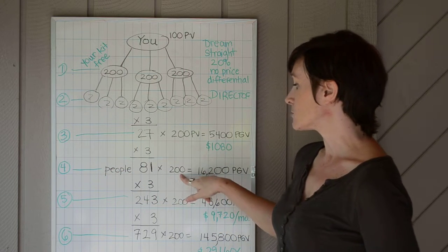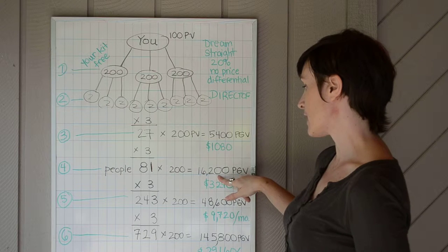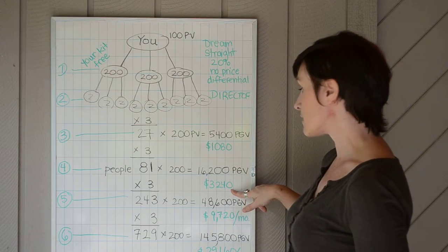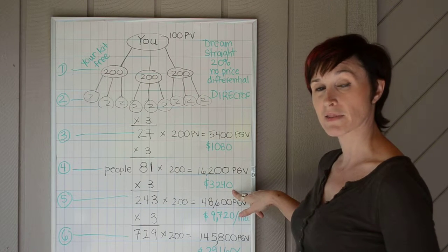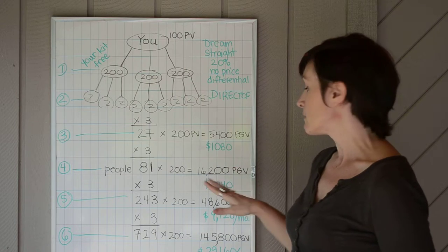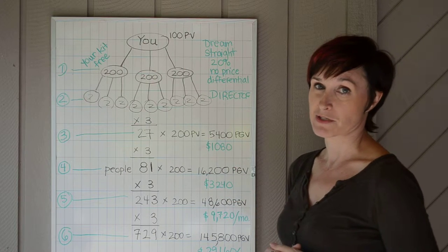So take it down another level. You're down to 81 people, 200 PV, 16,200 PGV, and you're making about $3,240 a month. Maybe it won't enable you to quit your full-time job, but certainly can make a huge difference in your life.